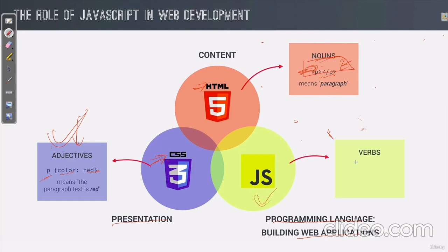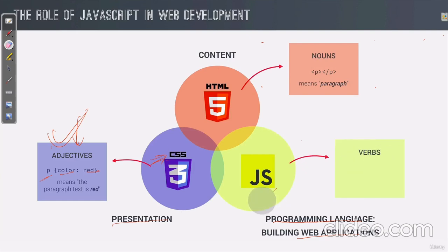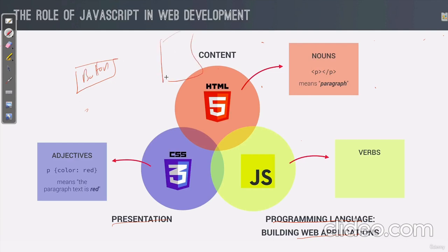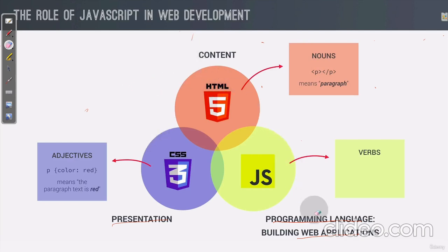Then JavaScript becomes the verb — the 'kriya'. Verb means action. For example, 'he is playing cricket' — here 'playing' is the verb. So JavaScript is the action. If you want to perform an action on an event — like you want that when you hover over a button, a photo appears next to it — that event-driven action is done with JavaScript. So I hope it is clear that the three roles in a website are: HTML, then CSS, and then JavaScript.